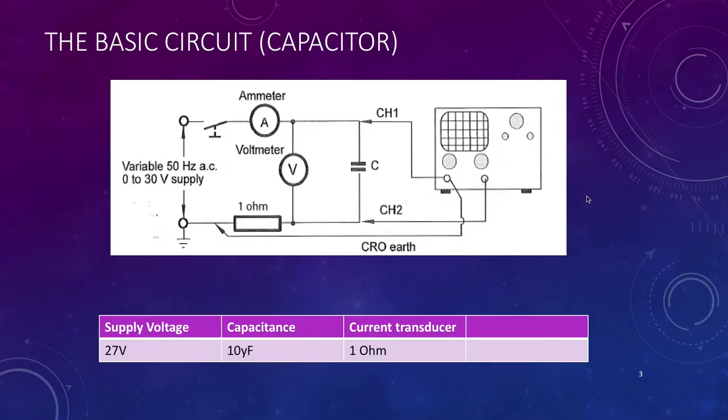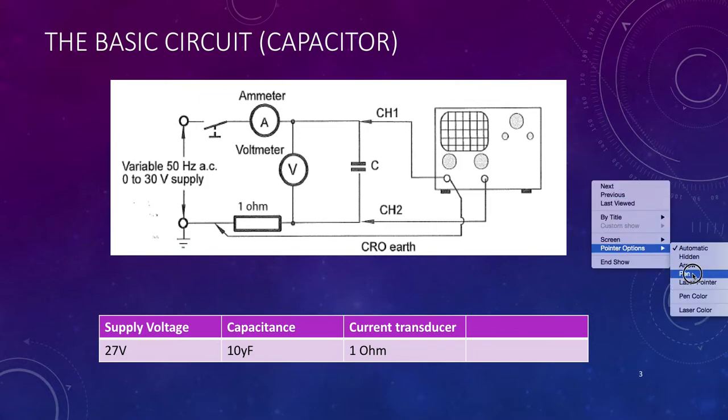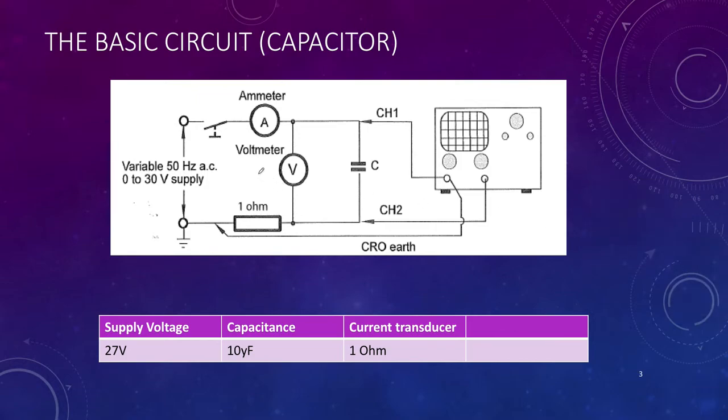Here's our basic circuit. We're going to be measuring the total current into the circuit using a clip-on ammeter, and we'll be using a voltmeter to measure the total voltage to the circuit.